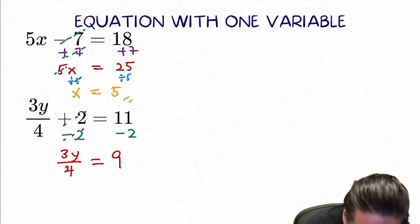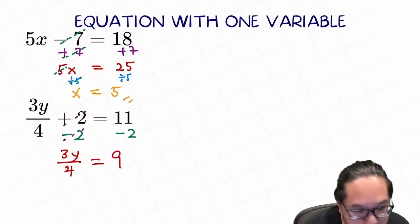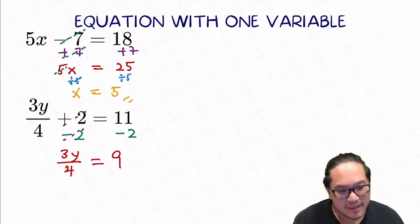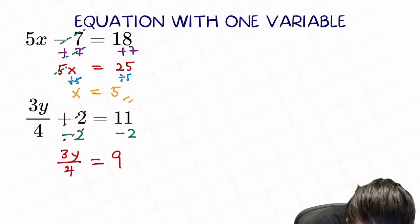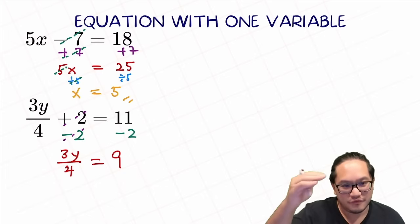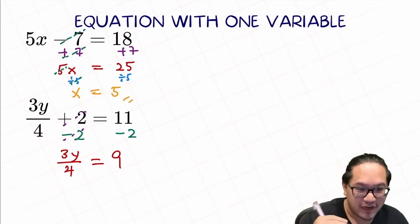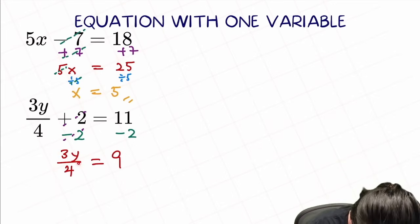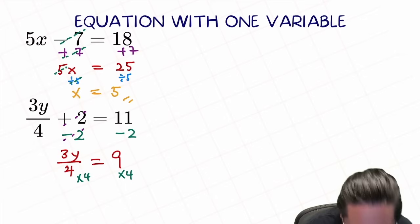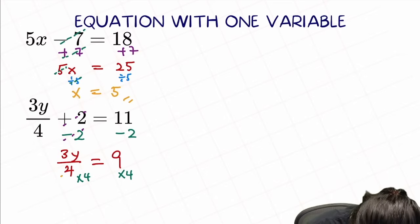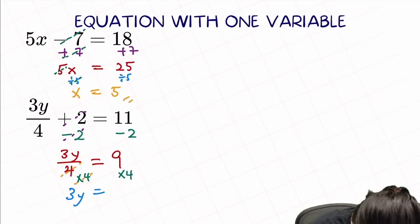So what is the next step? We need to divide by 4. This fraction line means divided by 4 — just like all fractions: 5 over 9 is just 5 divided by 9. So how do we cancel that out? We multiply 4 on both sides. It will cause the divide-by-4 to be canceled by the multiply. What we have left is 3y equal to 9 times 4, equal to 36.